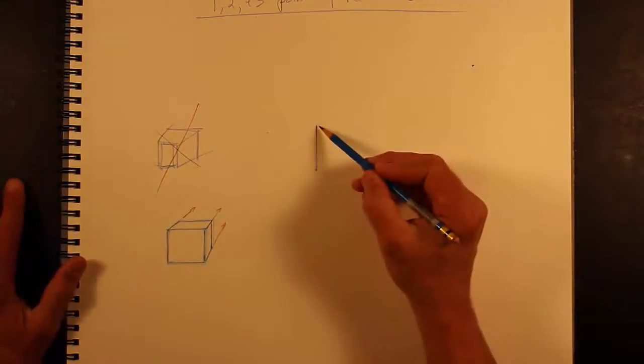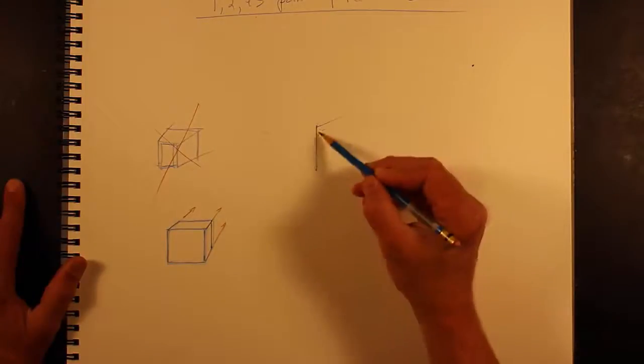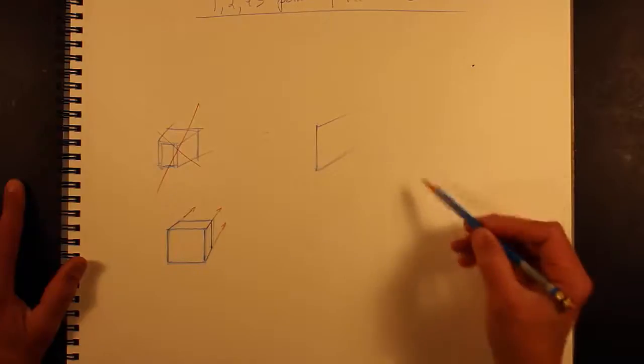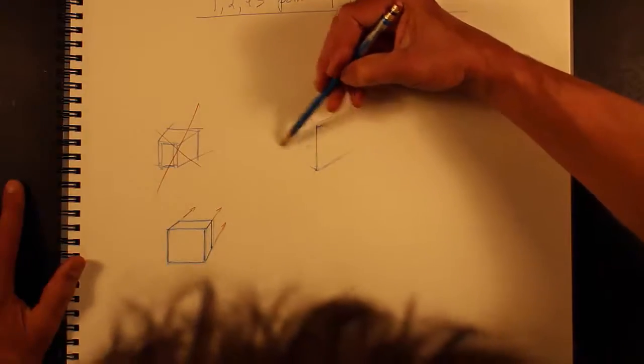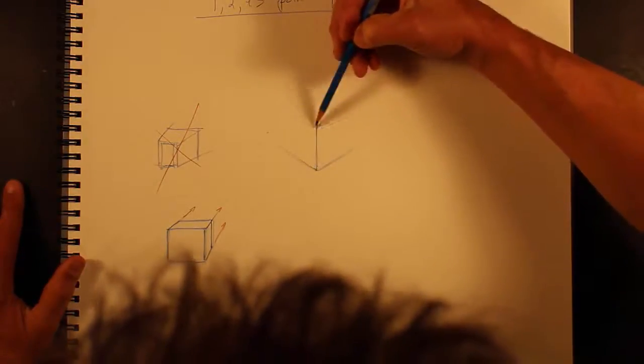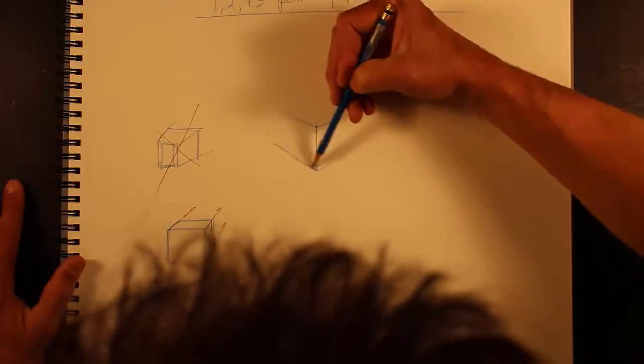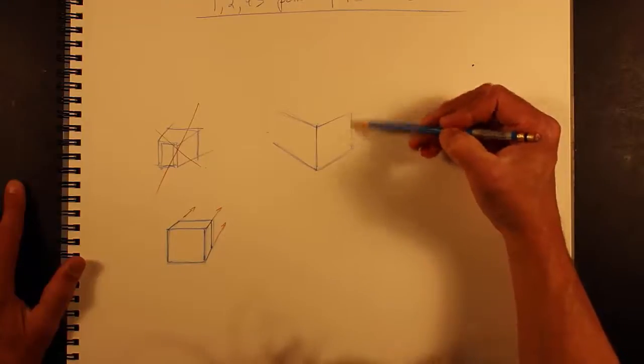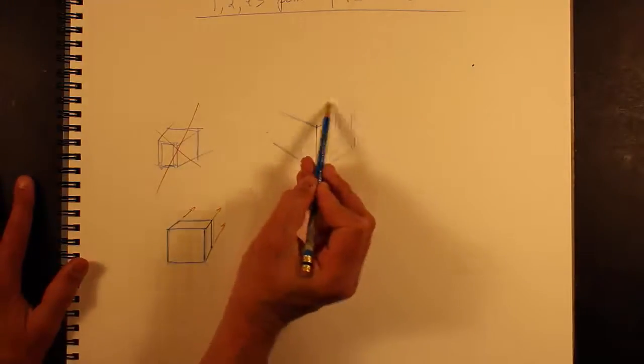With this, you can imagine there's a vanishing point. You're going to taper these lines going away, and then taper these lines going away. Figure out what looks like a square face, same over here.